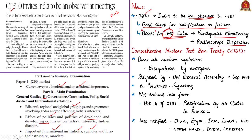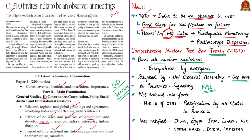To understand the article completely, let us know in detail about CTBT and CTBTO. The Comprehensive Nuclear Test Ban Treaty is the treaty banning all nuclear explosions everywhere by everyone. It was negotiated at the Conference on Disarmament in Geneva and was adopted by the United Nations General Assembly on 10th September 1996. It was opened for signature on 24th September 1996. Since then, 184 countries have signed the treaty, but the treaty has not yet entered into force.